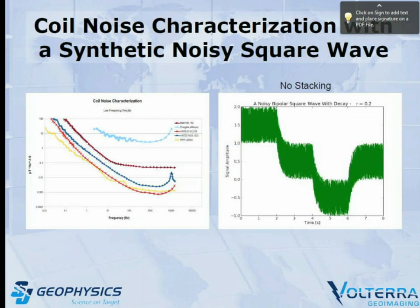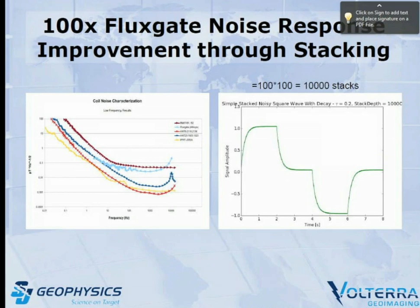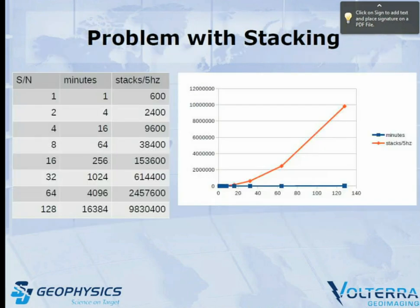If you look at stacking — here's a quick example. If we take a synthetic signal with noise on it and stack 100 times for a 10× signal improvement, the magnetometer noise starts getting into the range of the coils. If we stack 10,000 times more, we get right into where the coils are sitting. But then we quickly run into a time issue: if we want to improve signal-to-noise by about four times and we're usually looking at a one-minute reading, we have to record for 16 minutes. To improve by 16 times, we're up to 256 minutes, and it quickly disappears to where you'd better be looking at years.